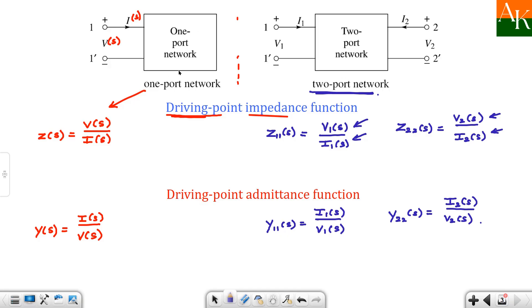If there is a single port network, one port network available, then you can have only one impedance function - driving point - and one driving point admittance function. Thank you.